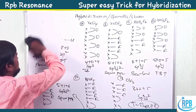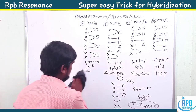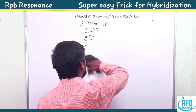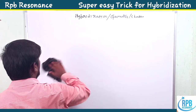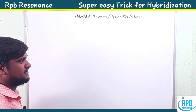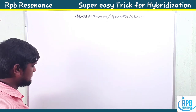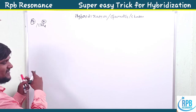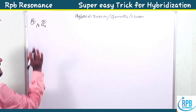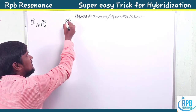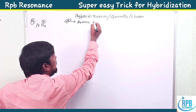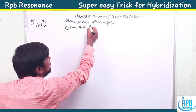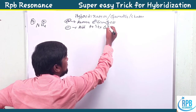Now let's move on to cations and anions of molecules. The rule is: if a cation is present, remove one electron from the group number; if an anion is present, add one electron to the group number.